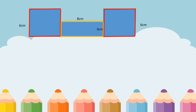Let us find the total area of this irregular figure. The first thing we should do is name the first square as A and the next square as C, and name the rectangle as B. To find the area of square A, we are going to use the formula A equals S times S, or side times side. We have 6 meters times 6 meters, which is equal to 36 square meters. So this is the area of square A.